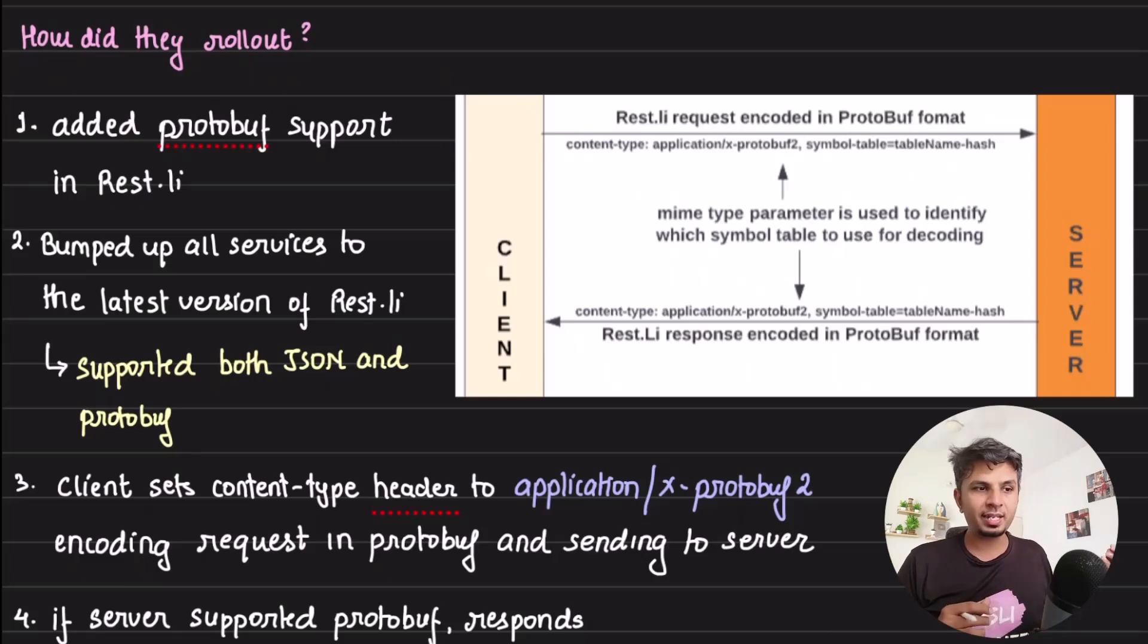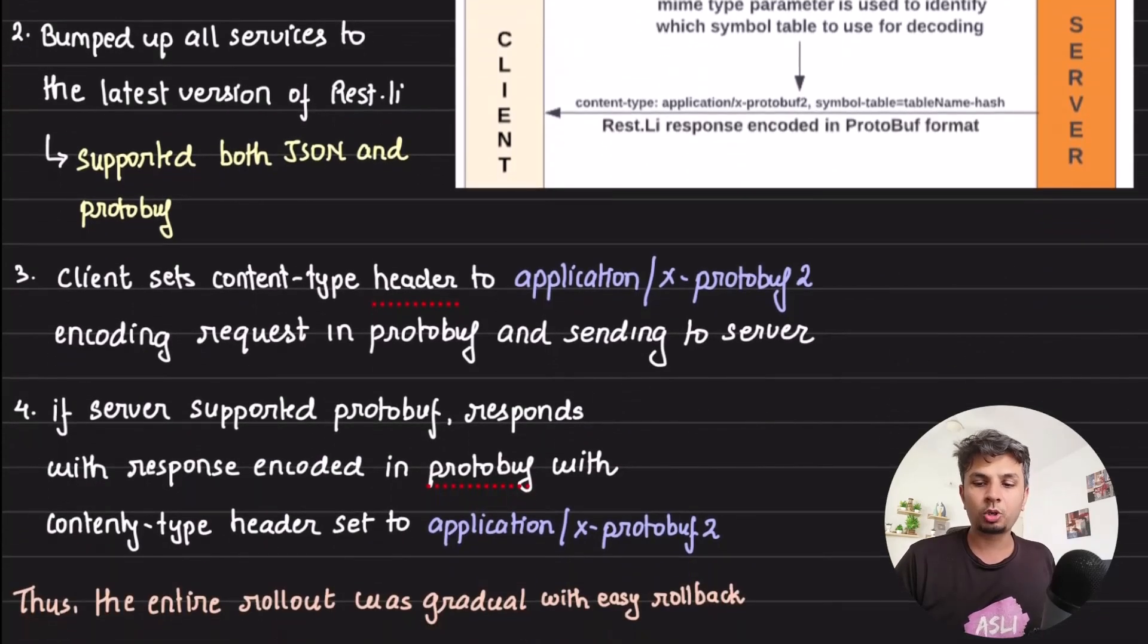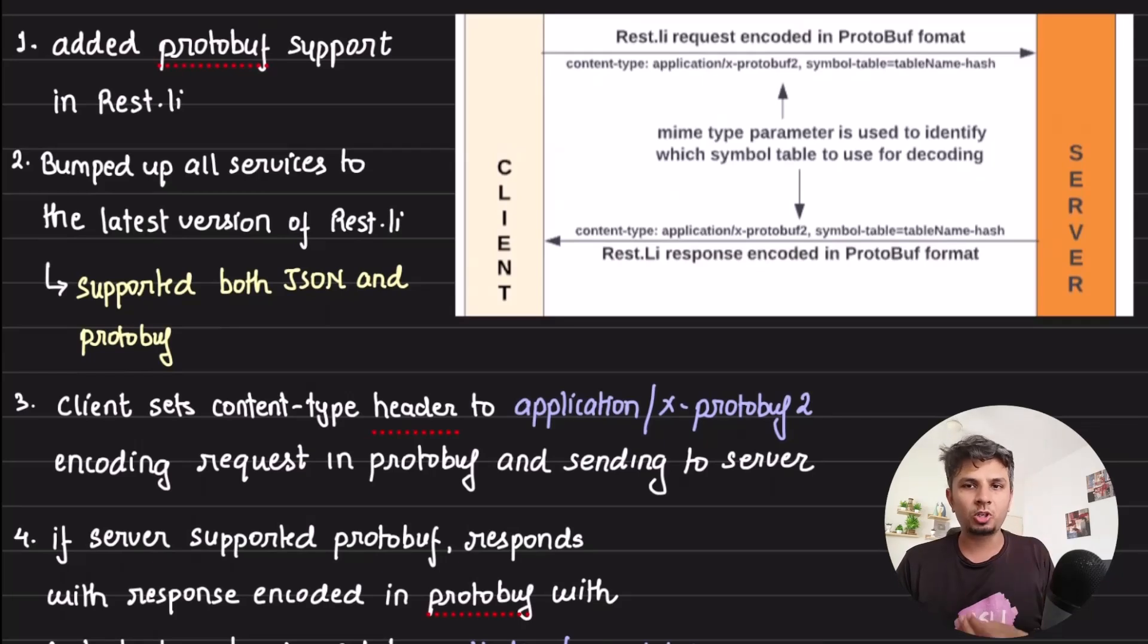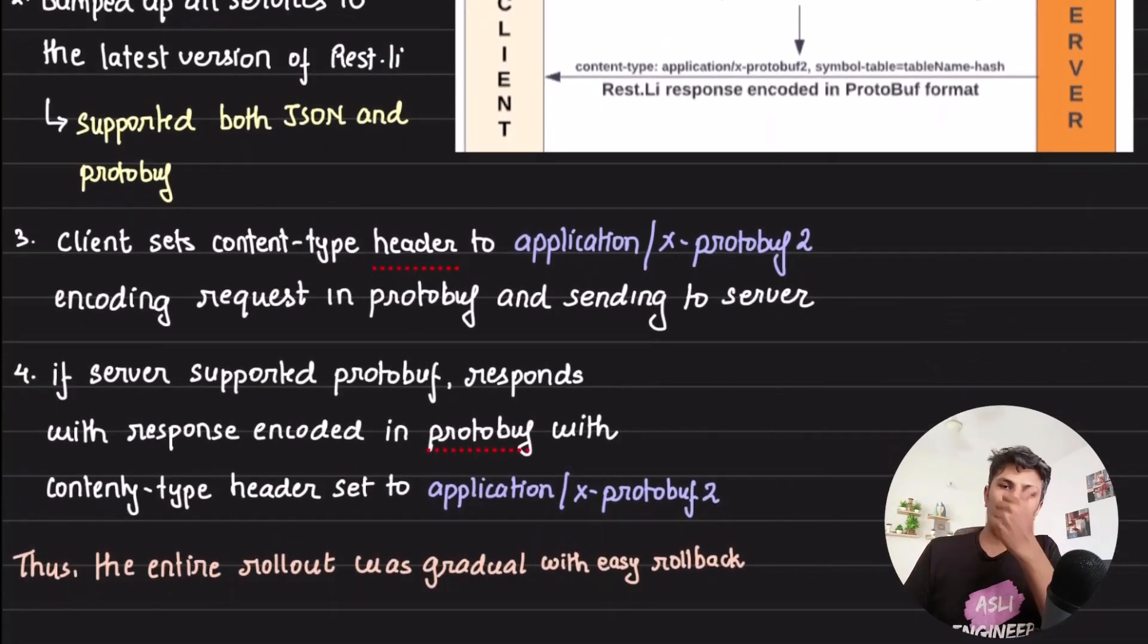But obviously supporting and directly starting to send protobuf requests is a totally different beast altogether. So what they did is to roll this out gradually - the client, whenever used to send the data in the protobuf format, used to set the header of content-type header with application/x-protobuf2. When this request was hitting the server, the server would know that whatever data I am getting is in this particular format, so it would use, instead of JSON decoder, protobuf decoder to basically parse the data and get the actual object out of it.